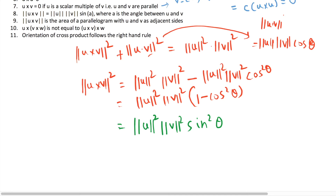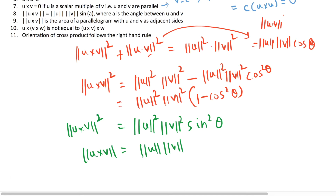This becomes the square of the length of u multiplied by the square of the length of v multiplied by sin²(θ). Taking square roots on both sides, we are left with: the length of the cross product of u and v equals the length of u multiplied by the length of v times sin(θ), the angle between them. That is what property eight states.